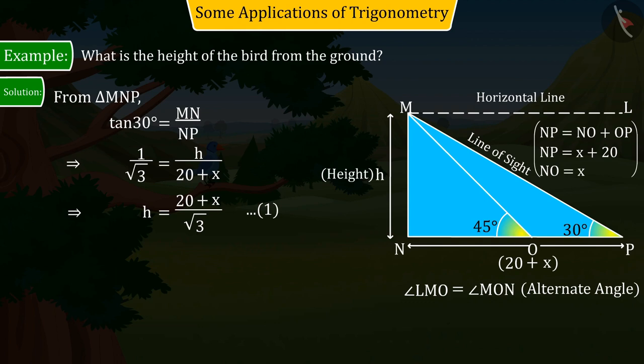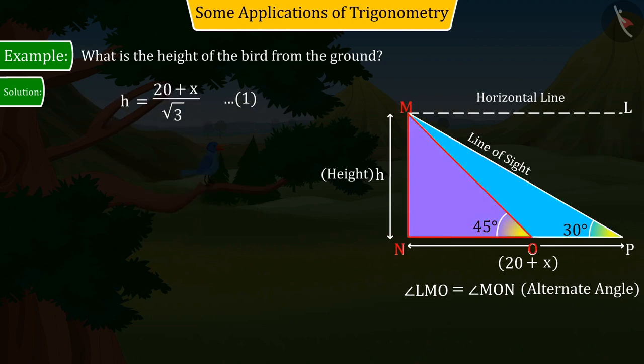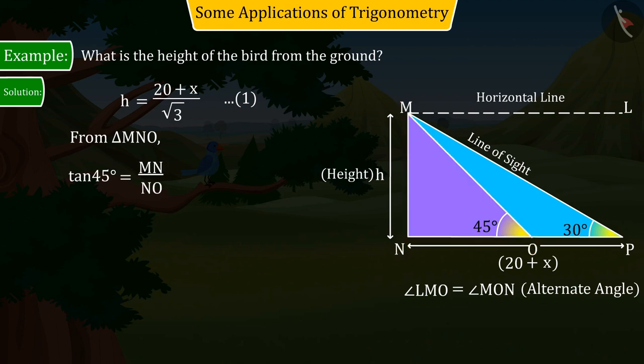Now, let's talk about triangle MNO. With the help of trigonometric ratios, the value of tan 45 degrees will be MN by NO. Solving the equation with the help of the figure gives H equal to X. Let us represent it as equation 2.